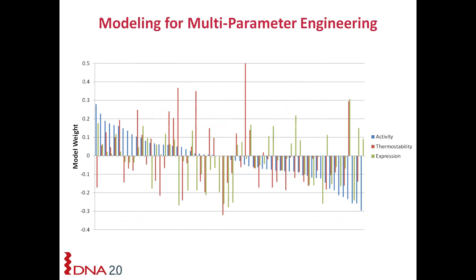You can measure this across many different functional dimensions. Here's an example where we measured 96 variants across three different properties: activity, thermal stability, and expression. As you see in bars of three, a variable can have good activity, poor thermal stability, and good expression — or any combination. Since you can pick and choose across variables, it becomes straightforward to engineer your process toward the desired profile.